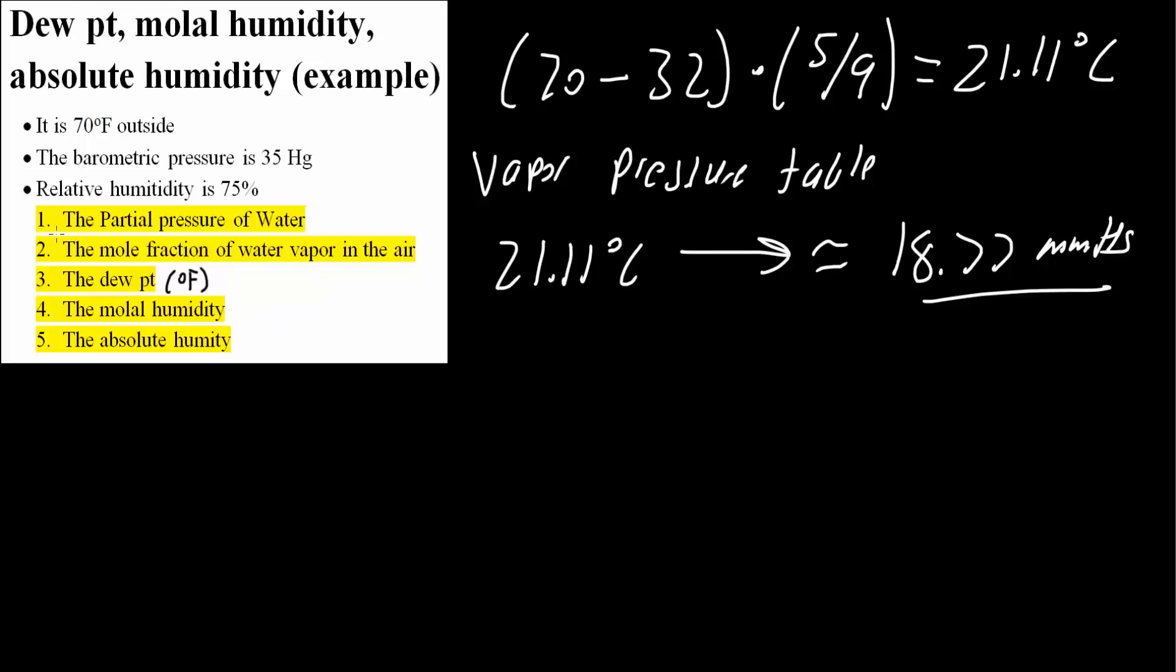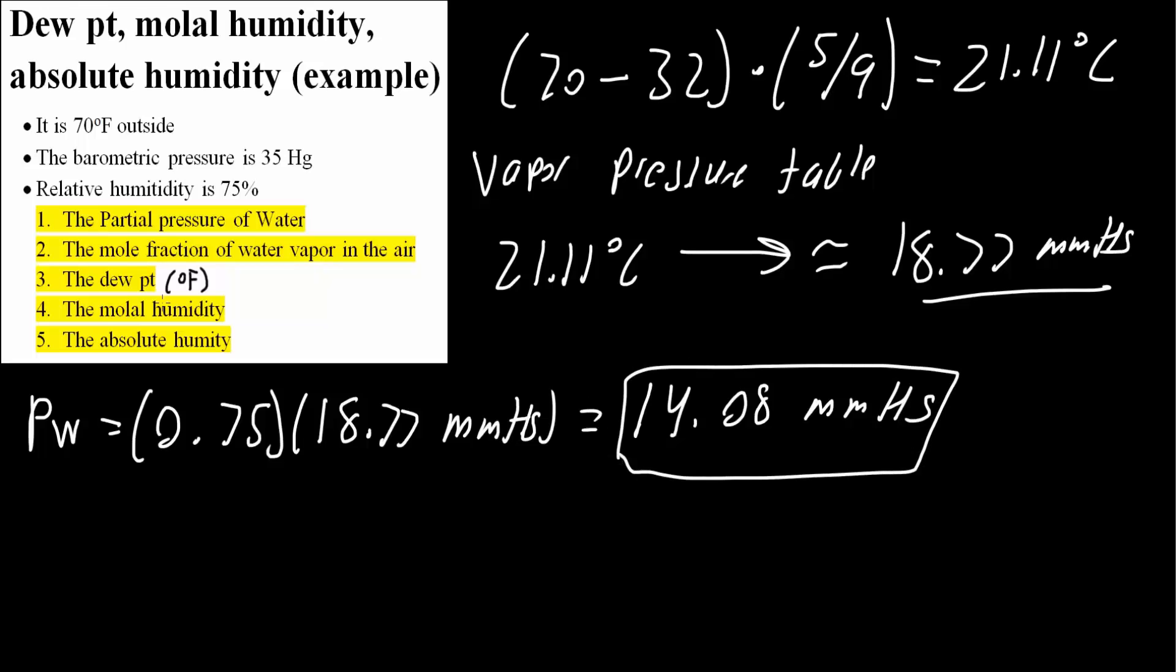Now we will calculate the first part, the partial pressure of water. The partial pressure equals the relative humidity of 0.75 times our vapor pressure, which was 18.77 mg of mercury. This corresponds to 14.08 mm Hg. This is the first answer to our problem, the partial pressure of water.